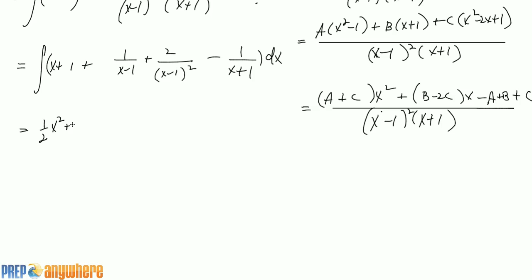Half x squared plus x plus ln of x minus 1. Okay, minus 2. So minus 2, this is just x minus 1. This one here is minus ln of x plus 1. So plus constant. You can combine these two to be ln of x minus 1 over x plus 1.